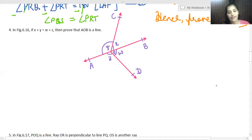So guys, it's exercise 6.1 question number 4 and I'm your Nandani ma'am. So you have to prove that AOB is a line.